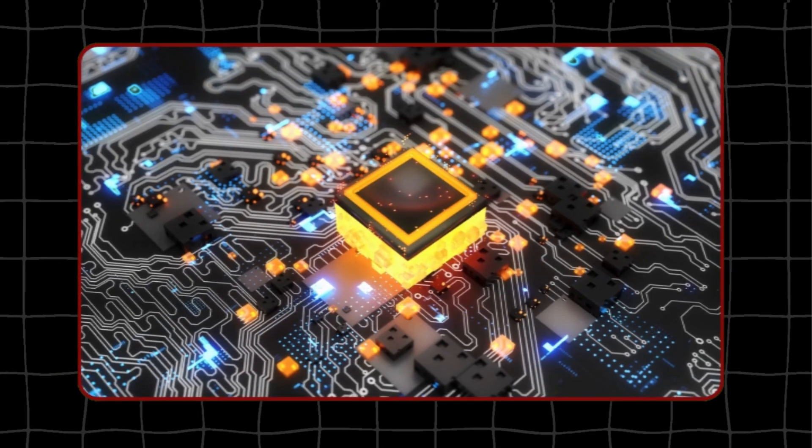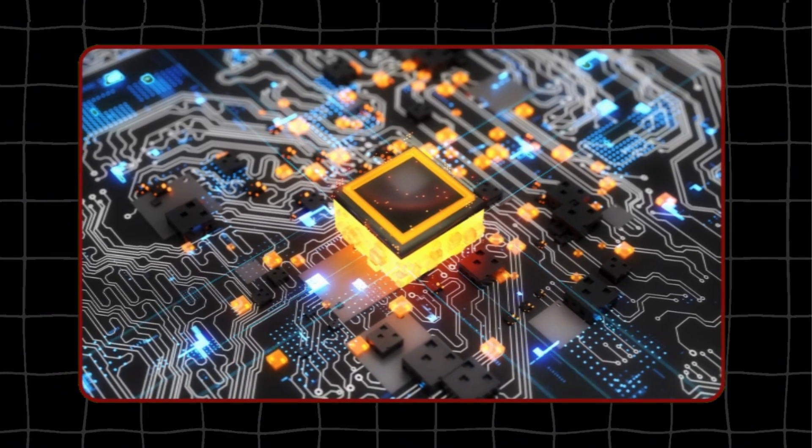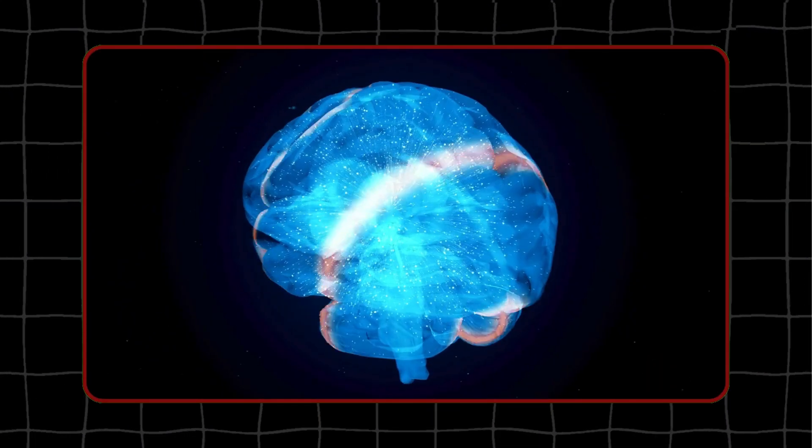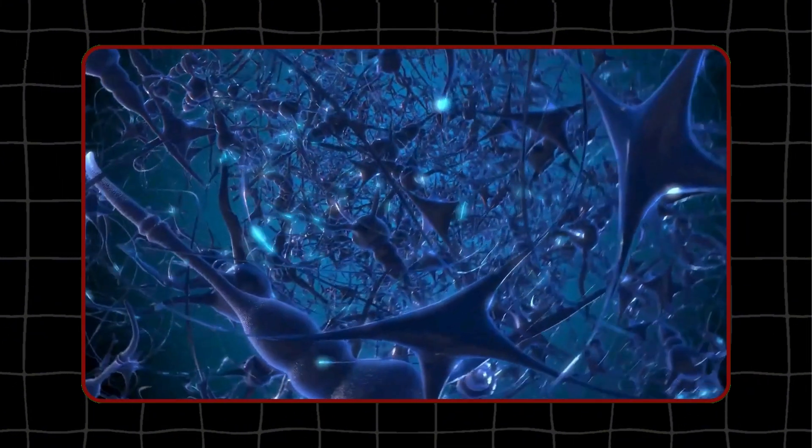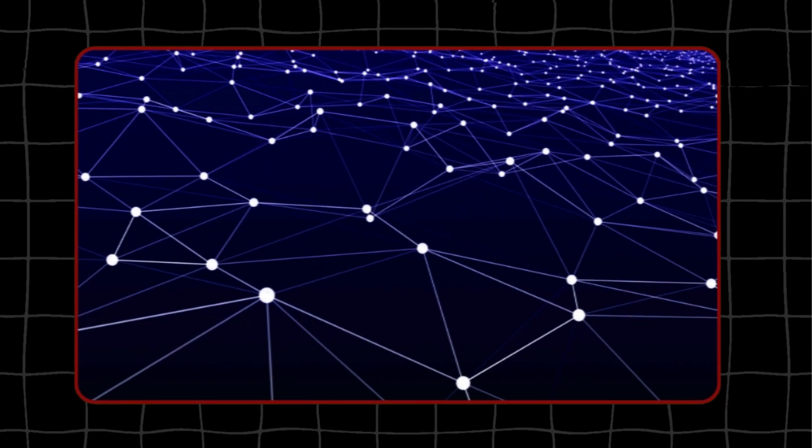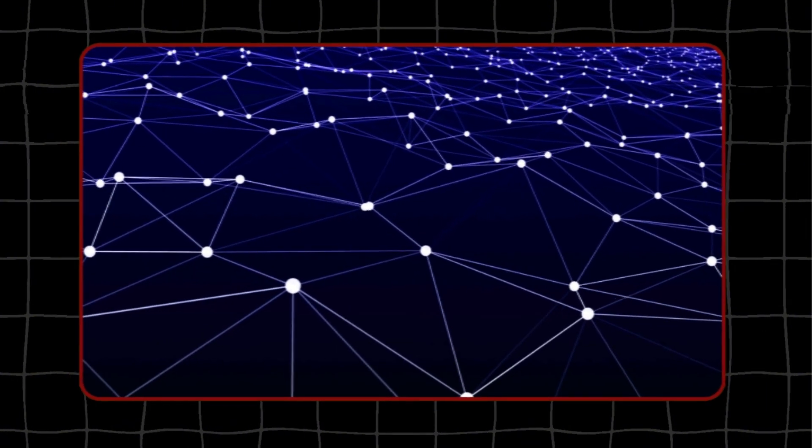To build this model, the researchers used an extensive dataset of high-resolution motion data recorded from real rats. These recordings captured the rats performing a wide range of natural behaviors and movements. This data ensured that the virtual model could capture the complexity of a real rat's movements.